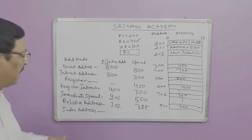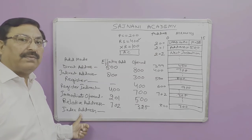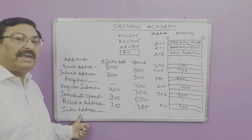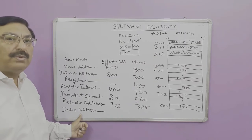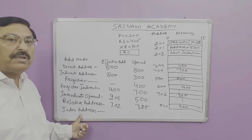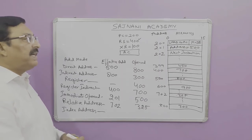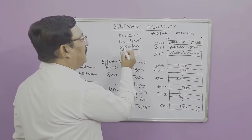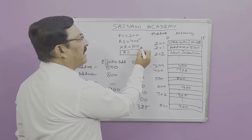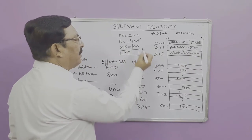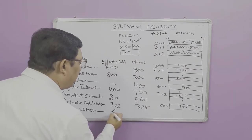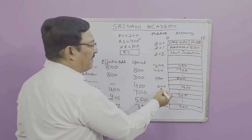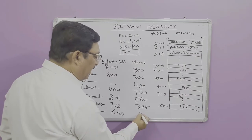In index addressing mode, the value of the index register is added to the address mentioned in the instruction. The address is 500 and the index register XR holds 100, so 500 plus 100 equals 600. The effective address is 600, and at address 600 the operand is 900.